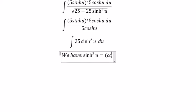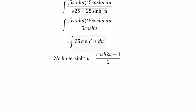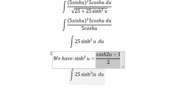Equal to cosh 2u minus 1 divided by 2. So we change this one and put it in here.